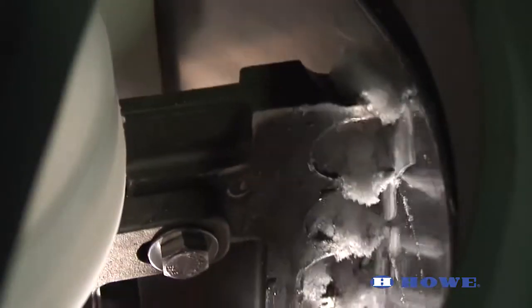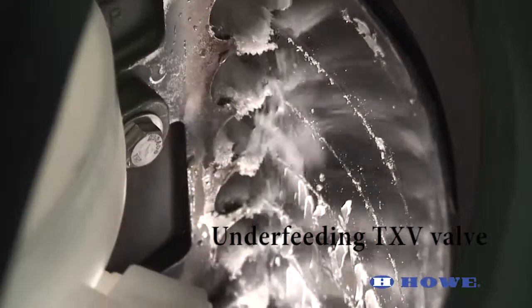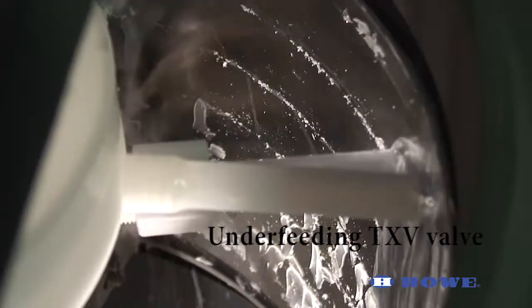Once you see evidence of underfeeding, open the expansion valve a quarter turn so that ice is again harvested on each rotation.